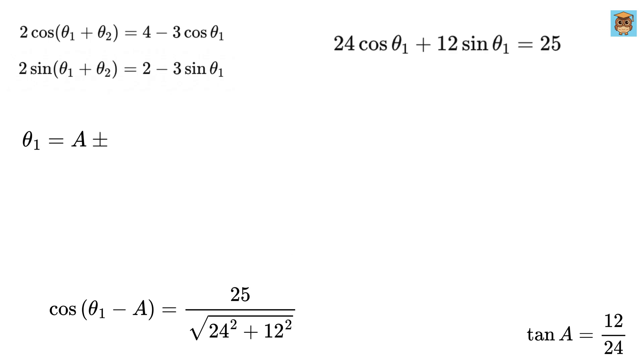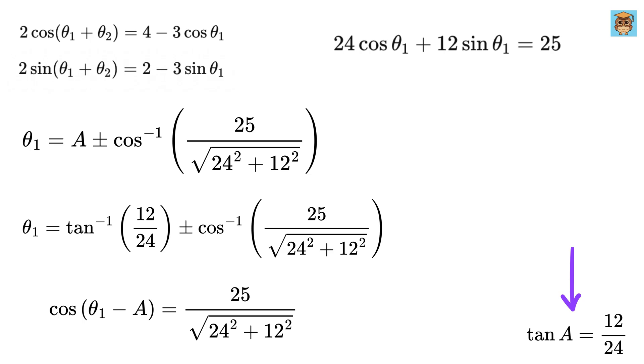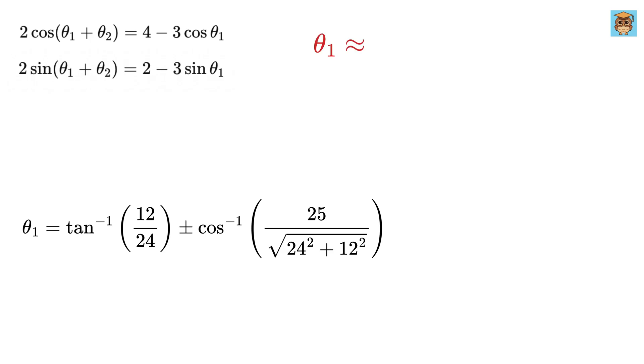But this is the formula for cos theta 1 minus A equals this, which means theta 1 equals A plus or minus cos inverse of 25 over this value. And we can rewrite this A as tan inverse of 12 over 24. Thus, theta 1 is approximately 48.14 degrees or 5 degrees.